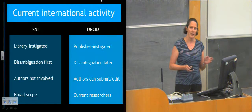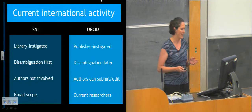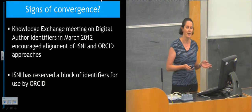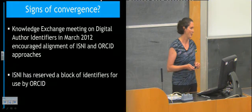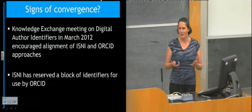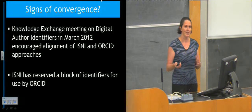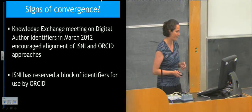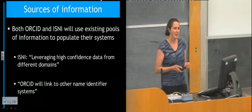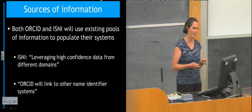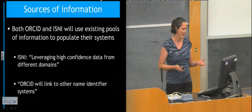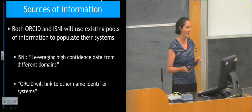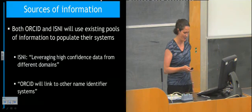These are the two big international initiatives going on right now, and there are signs of convergence. We had a big meeting in London in March, organised by the Knowledge Exchange Group on digital author identifiers, and they were very much encouraging the alignment of the ISNI and ORCID approaches. ISNI has reserved a block of identifiers for use by ORCID, I understand — so these groups are talking to each other. Both are interested in using existing sets of information to populate their systems: ISNI wanting to leverage high-confidence data, and ORCID linking to other name identifier systems.